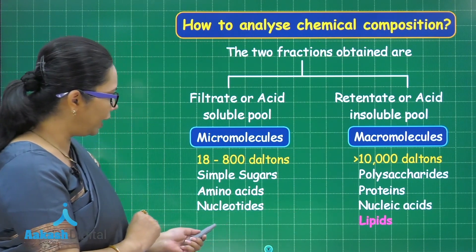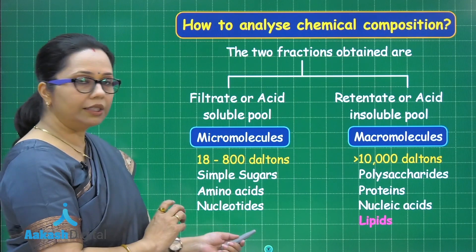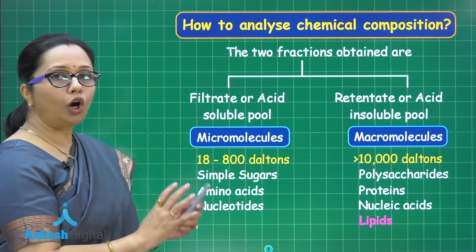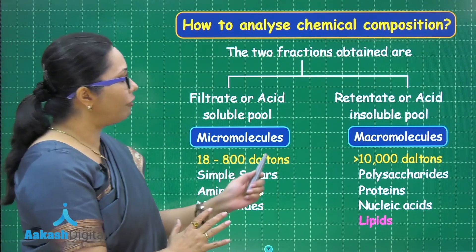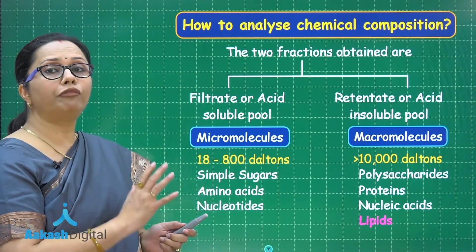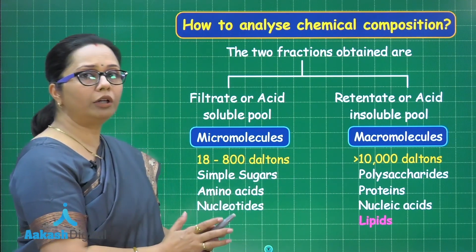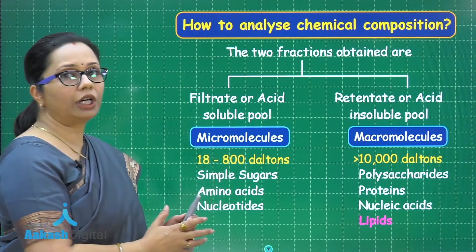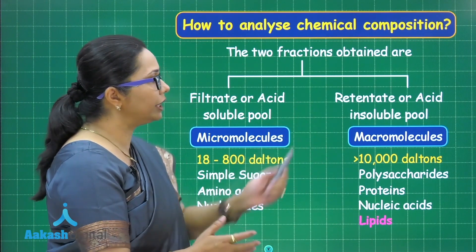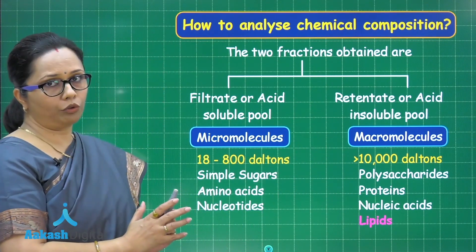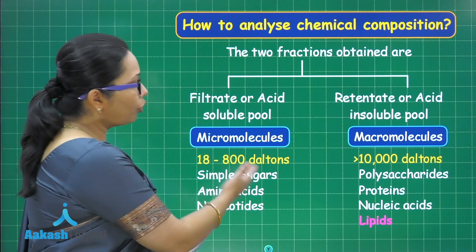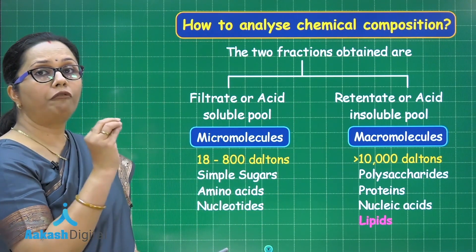Last but not least, lipids. Lipids don't fit neatly into either category. Although they appear in the retentate pool, they are not strictly macromolecules — they are found there simply because of their insoluble nature. Lipids never form polymers, and their molecular weight is within 800 Daltons. So lipids in the retentate pool are an exception — they are not macromolecules.